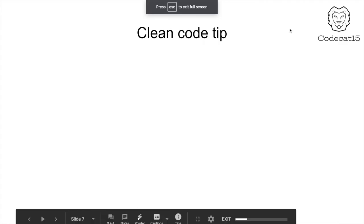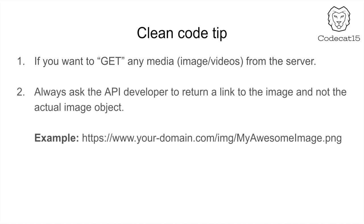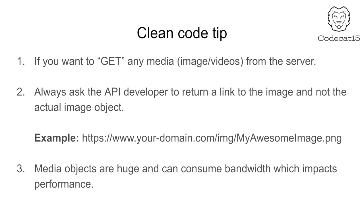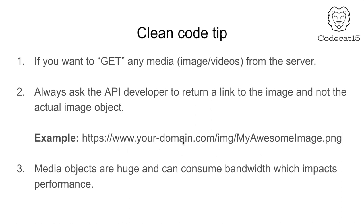Now let me switch back to the presentation and share some clean code tips. If you have uploaded an image, video, or any media to your server and want to fetch it back, it is a very good idea to tell your API developers that the media object should return its URL — not the actual image or video object. The reason is that media objects like images or videos are very large, and if such huge data is transferred from the server to mobile devices it costs network bandwidth. If you show many images in a table view and the API returns actual image objects instead of links, there may be a glitch or it can take a lot of time for those images to load.